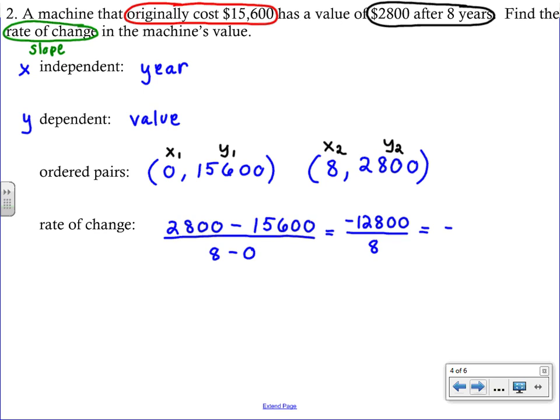And we get a negative 1600, which should make sense, because the value of the machine is going down, decreasing, so we should have a negative slope. And then our label on this, if you think back to the units in each of the numerator and the denominator, this was in dollars, and this was in years. So our label on our answer will be dollars per year. And the negative is okay, because like I said before, the value was going down. So it went down by 1600 dollars per year.